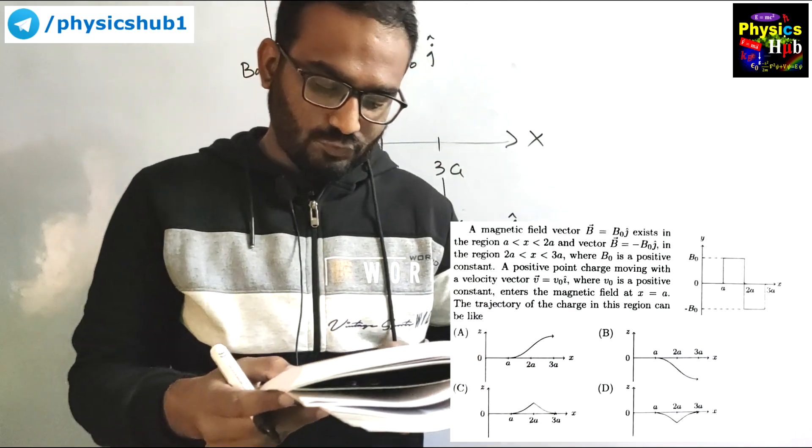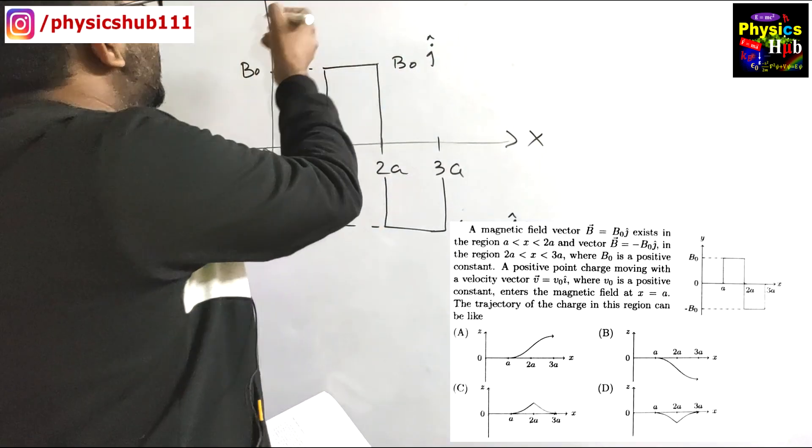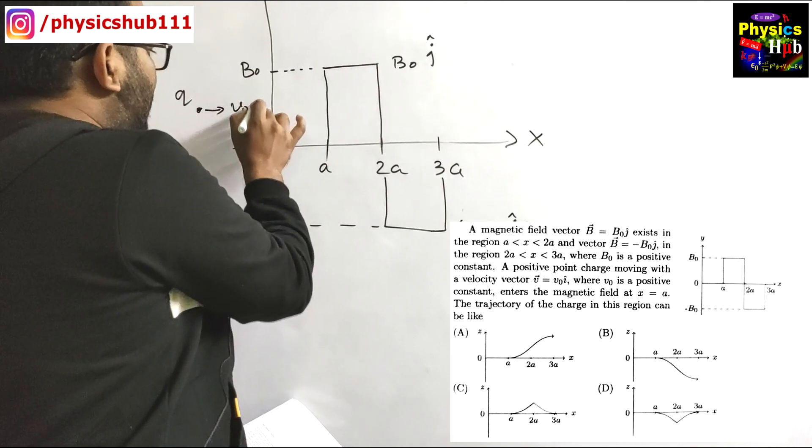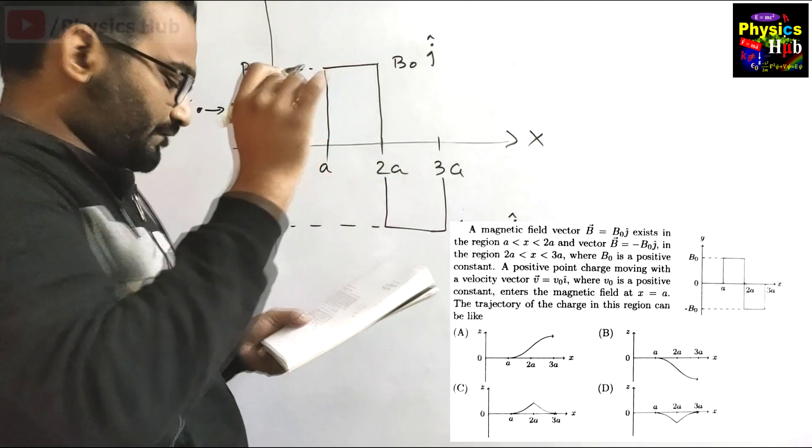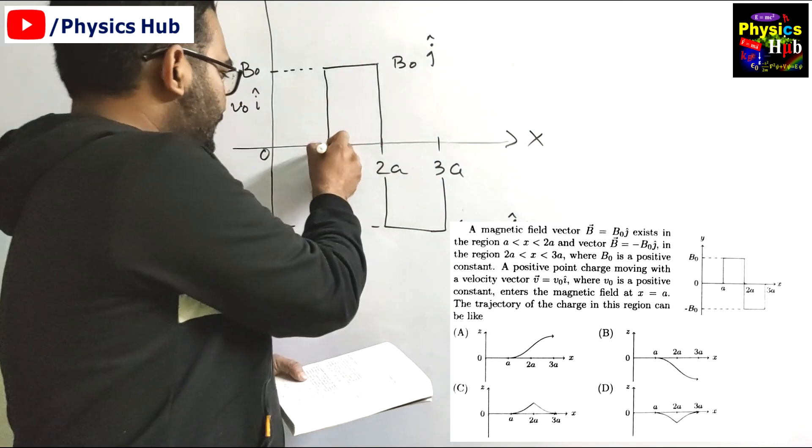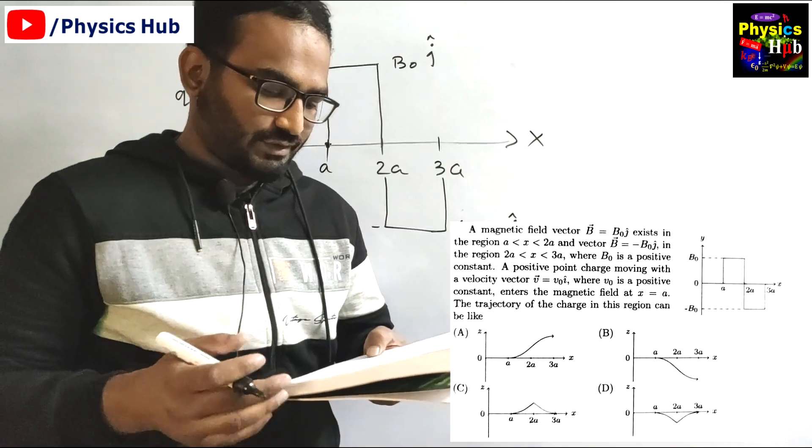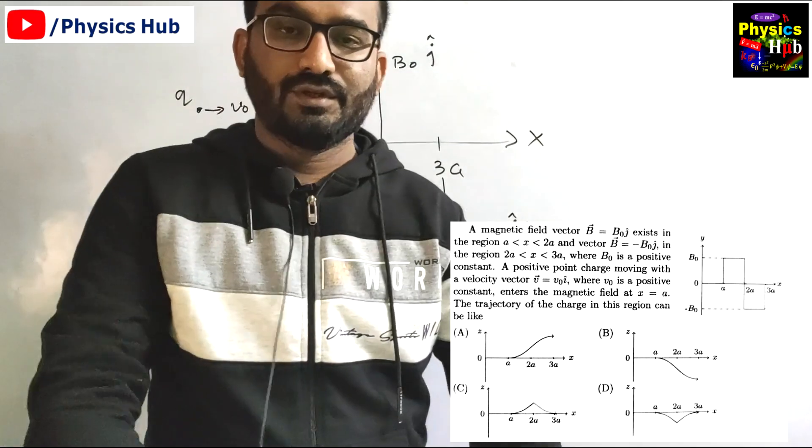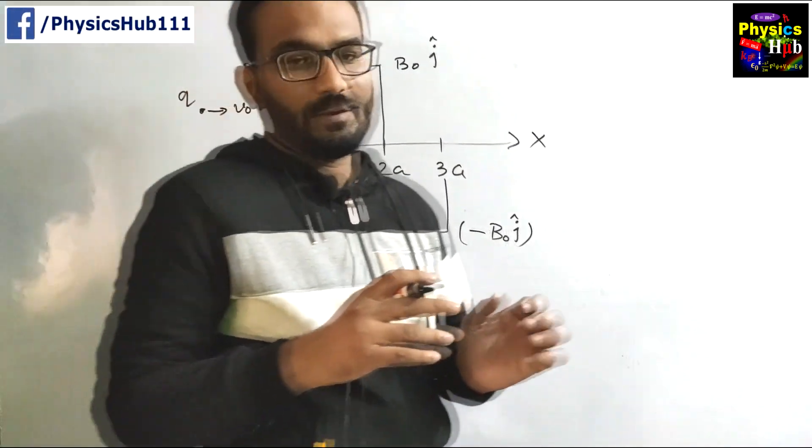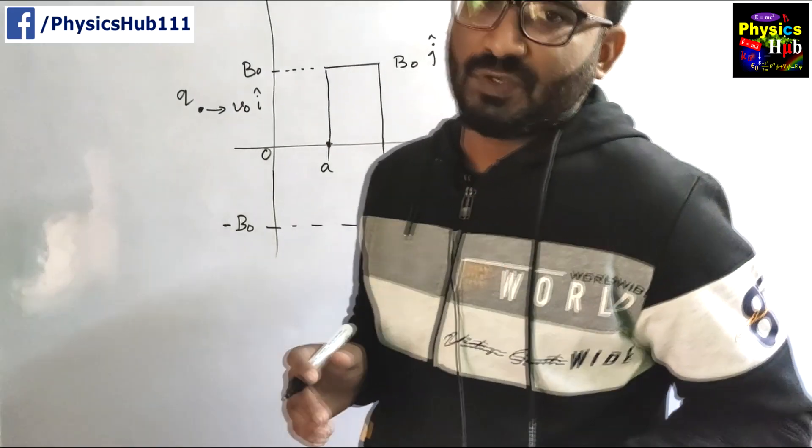A positive point charge moving with velocity vector v equals v naught i cap. A positive point charge is given to you, plus q, and it is moving with v naught i cap where v naught is a positive constant. It enters the magnetic field at x equals a. At this point the charge enters into this magnetic field. The trajectory of the charge in this region can be like so. You are given 4 options, 4 curves, and you have to identify which of the following curves represent the trajectory of the charge.